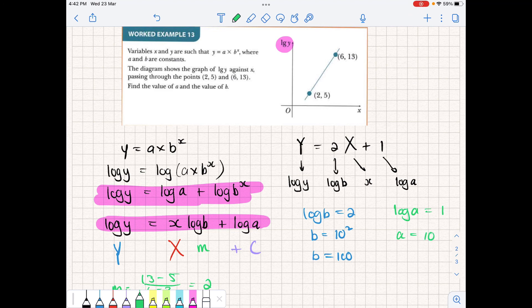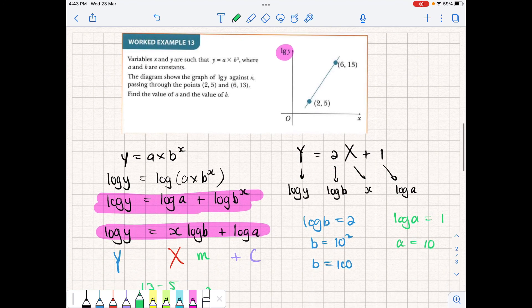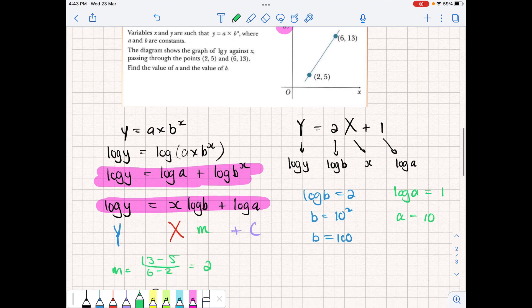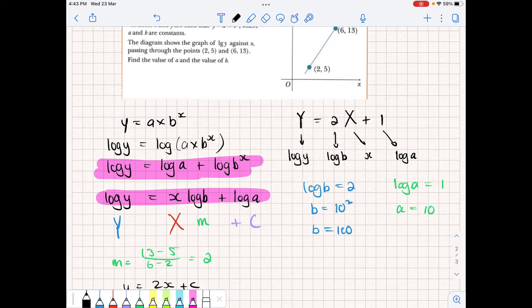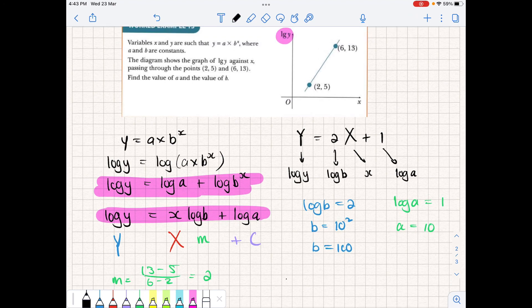So that's how we could change from a linear form back to its non-linear form, or how we can be given the equation for both, and we have to compare them to find the values for a and b. So the equation for this original equation could have looked something like y = 10 times 100 to the power of x, for instance.